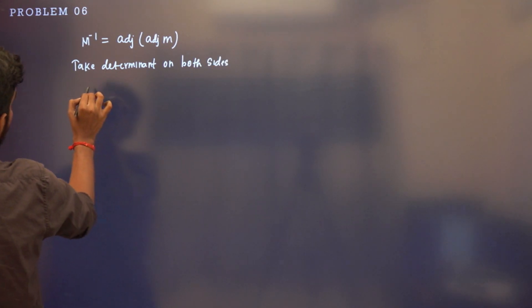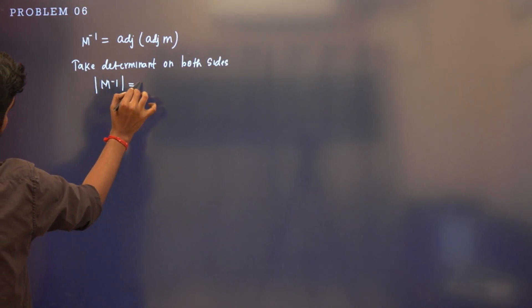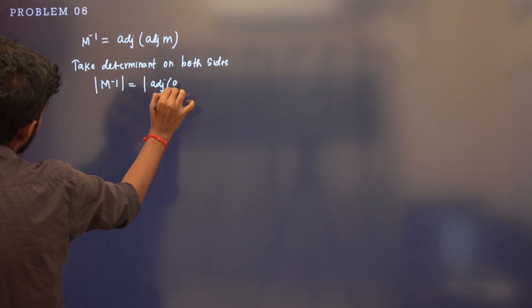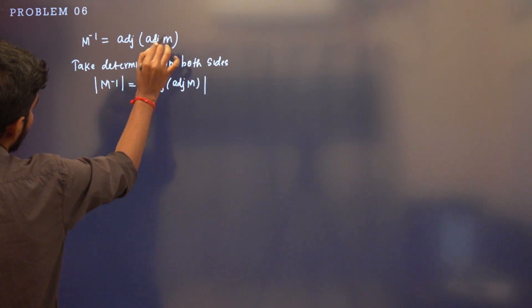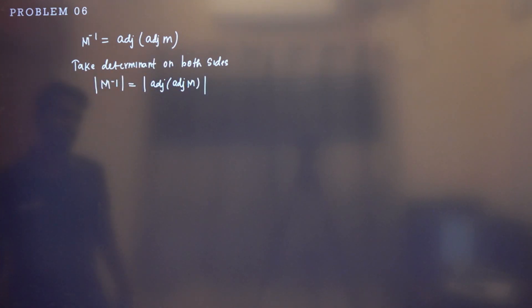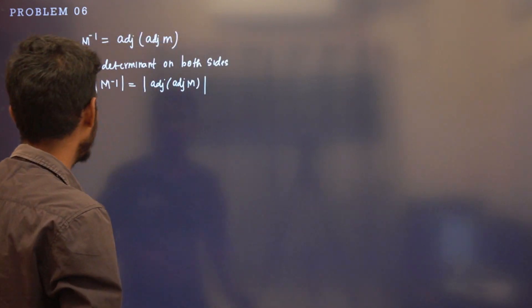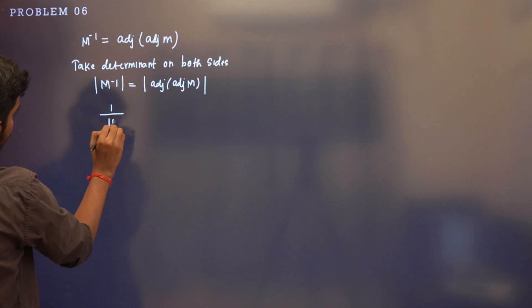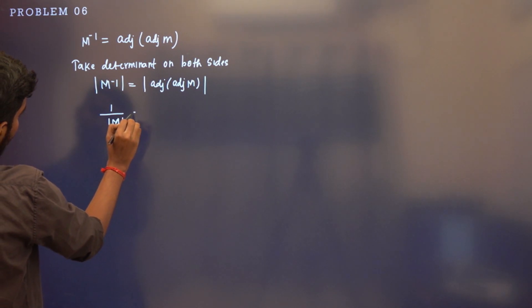So then I know: determinant of M inverse equals determinant of adjoint of M. Determinant of M inverse is the same as 1 divided by determinant of M. This is a basic property of determinant.